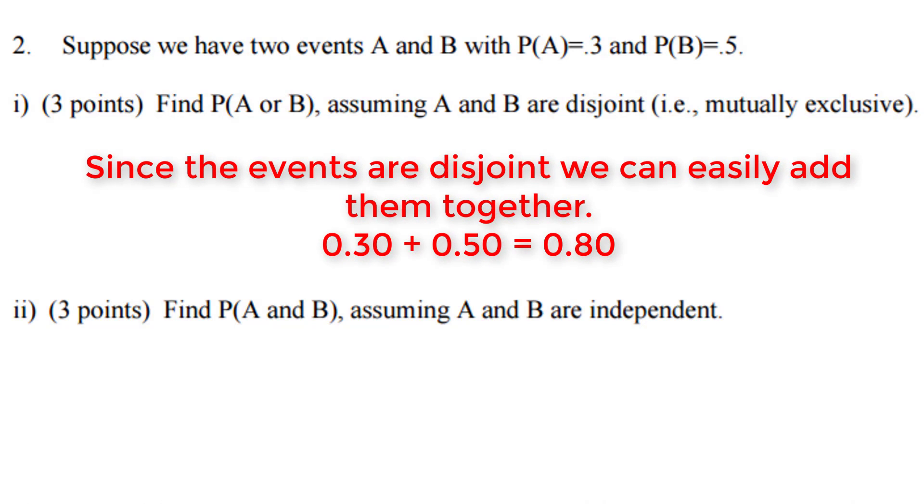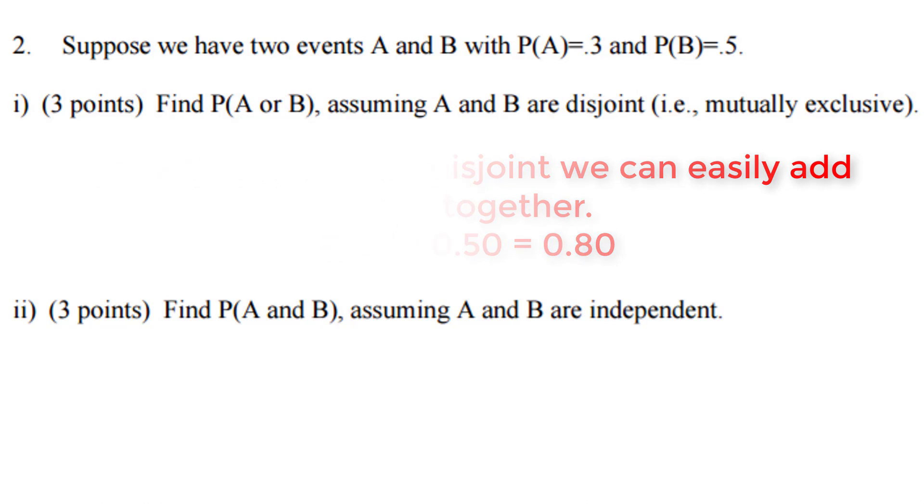So since these events are disjoint, we can add them, and we'll use the OR word for that. What is the probability of event A or B? The probability of event A or B would be 30% plus 50%, which is 80%.